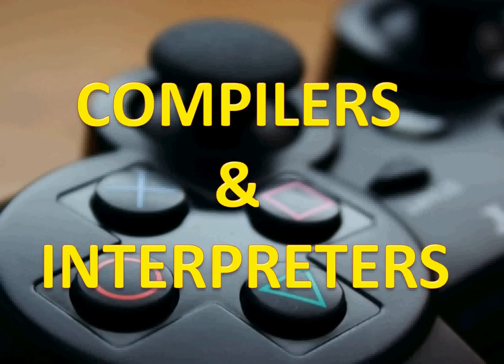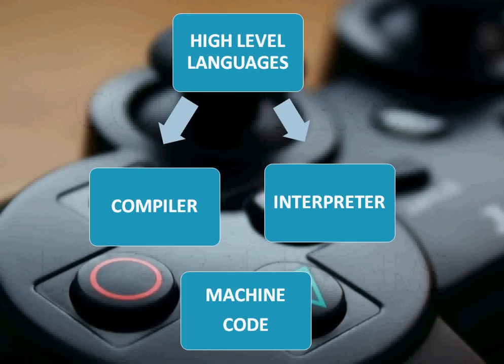First of all, you have to learn what are compilers and what are interpreters. Compilers and interpreters do basically the same thing - when we have a high-level language program, it translates it to machine code. The compiler and interpreter do the same thing but in a different way. Both translate to machine code but in a different way. If you don't know what are high-level languages, just check out my previous video where I explained everything there.